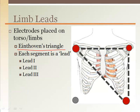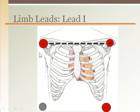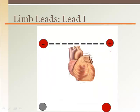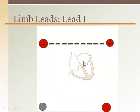Einthoven is the Dutch physician who invented a method to record the electrical activity of the heart in 1903, for which he received a Nobel Prize. Each two-lead segment is referred to as a lead, and each lead has a negative and positive electrode. For Lead I, the negative electrode is on the right shoulder and the positive electrode is on the left shoulder. The net direction of atrial depolarization — from the sinoatrial node spreading across the atria — is right to left, which is parallel to Lead I.